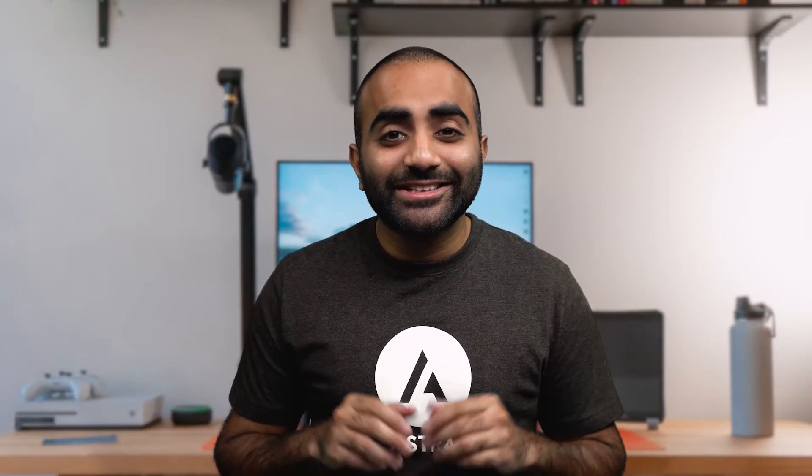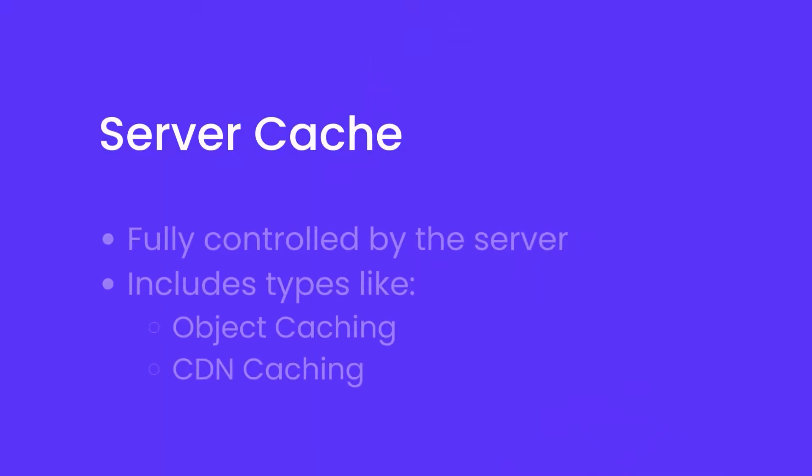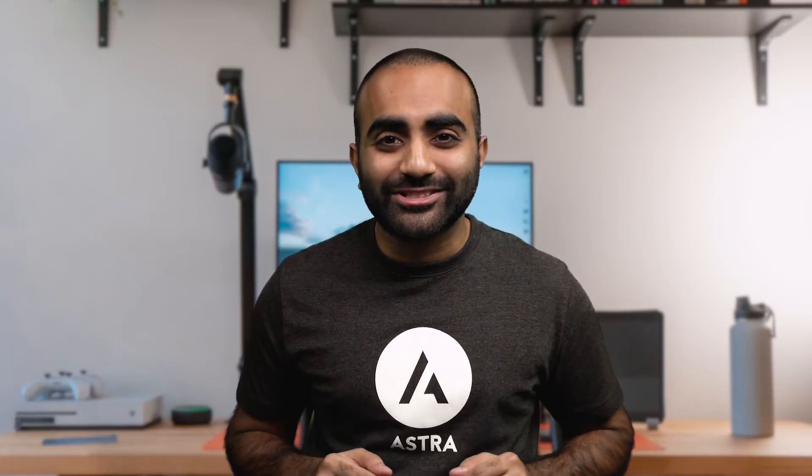And finally, server cache — these are caches stored on your site server. They are fully controlled by the server and include various types like object caching, CDN caching, and more. Now that we have an understanding of what caches are, let me show you how we can clear the cache on your WordPress website.